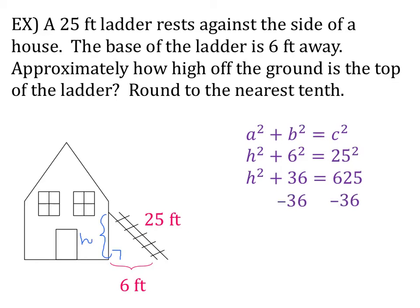Subtract 36 from both sides. So H squared is equal to 589. I just want to solve for H, so I need to take the square root of both sides. And when you type that in your calculator, you find that H, the height that is from the ground to the top of the ladder, is 24.3 feet. Make sure that if you have units in your problem, you're putting units in your answer.